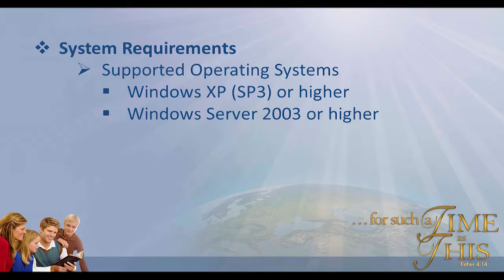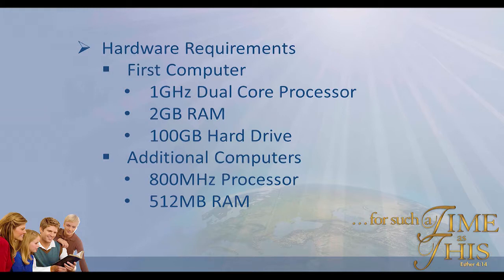For hardware requirements, on the first computer that you install the program on, the minimum requirements are listed on the screen. You can see it's a 1 GHz dual core processor, 2 GB of RAM, and 100 GB of hard drive space. That's the minimum requirements for your main computer. I would really recommend you go above that so that the program runs a little bit faster and more responsive, but at a minimum, that is the requirement.